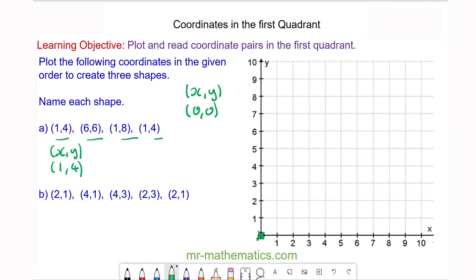So when x is 1 it's here, and when y equals 4 it's here, so the coordinate goes there. The next coordinate pair is when x is equal to 6 and y is also equal to 6. So we go 6 across on the x-axis and 6 up on the y-axis, and the coordinate is here.